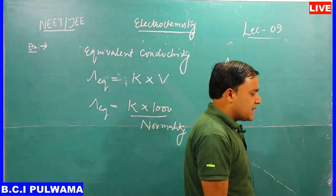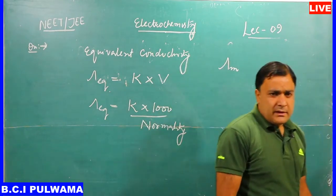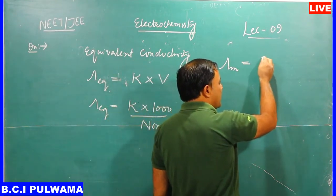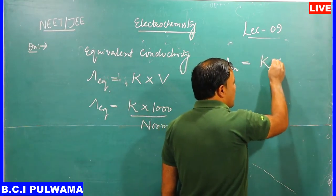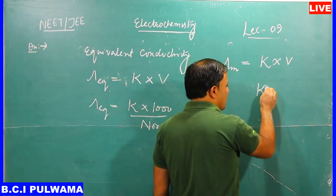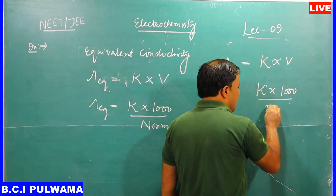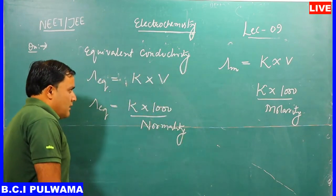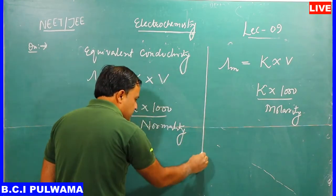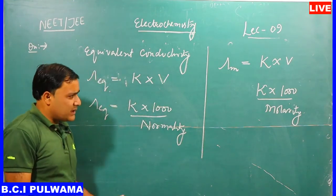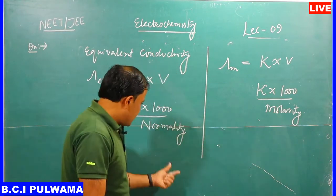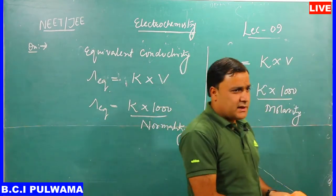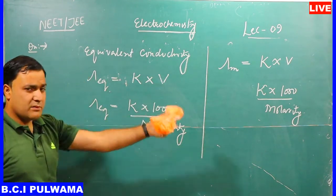Similarly, molar conductivity differs from equivalent conductivity: equivalent conductivity considers one gram equivalent of an electrolyte, while molar conductivity considers one mole. So λ_m = κ × V = κ × 1000 / molarity. Here normality represents gram equivalents per litre and molarity represents moles per litre.